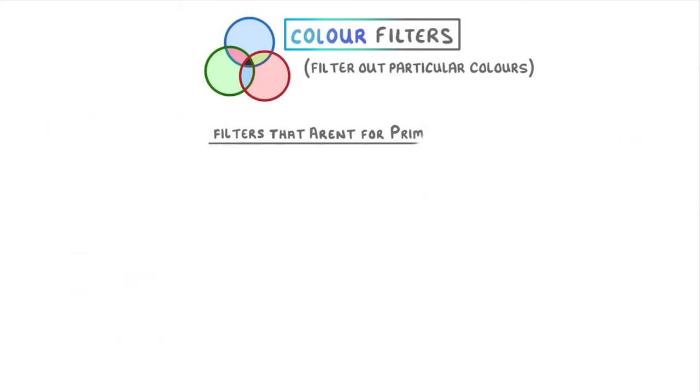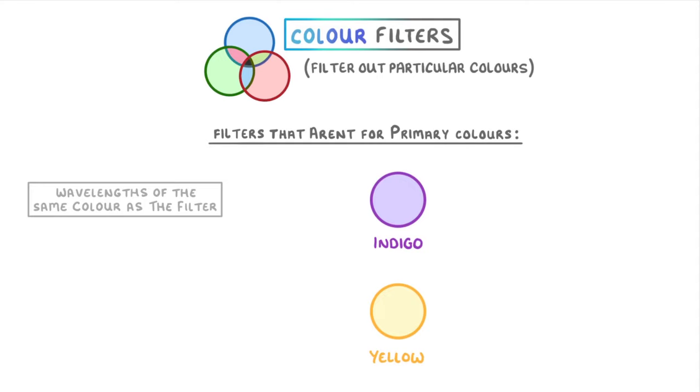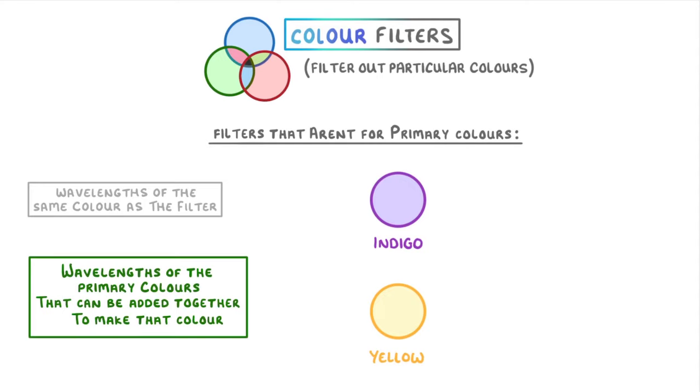Filters that aren't for primary colours, like yellow or indigo filters, let through both the wavelengths of light that are the same colour as the filter and also wavelengths of the primary colours that can be added together to make that colour.